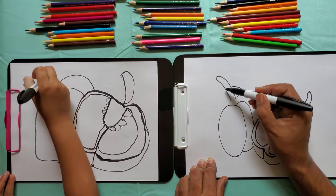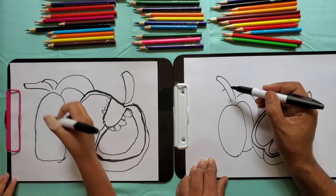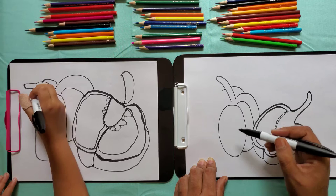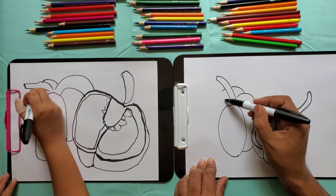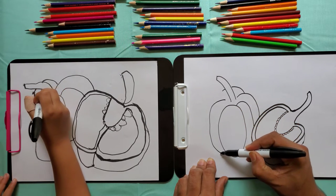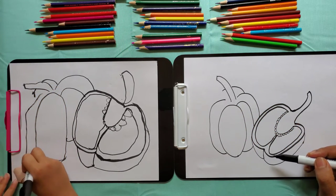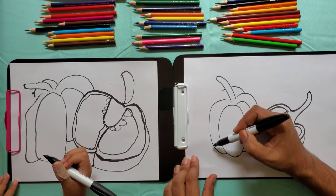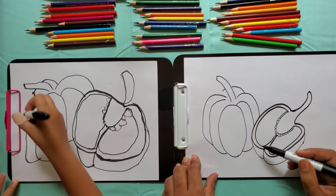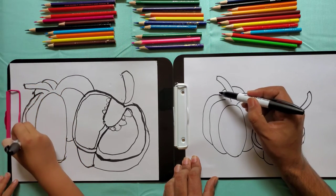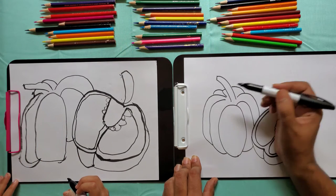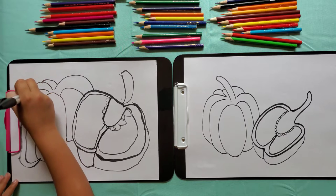There's a line like this, and another line like this. Let's draw a line like this. Draw a line like this, and from here, draw a line like this.